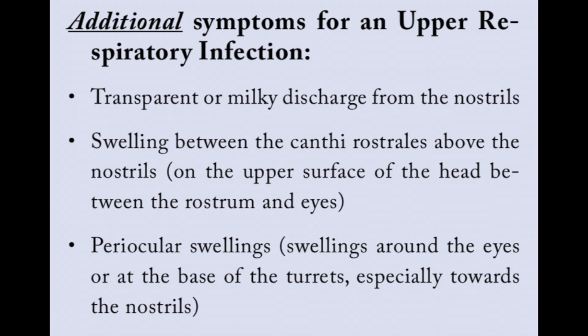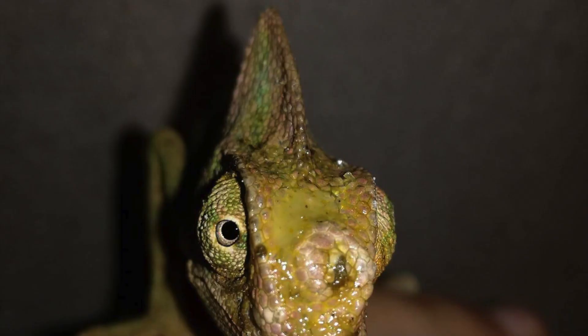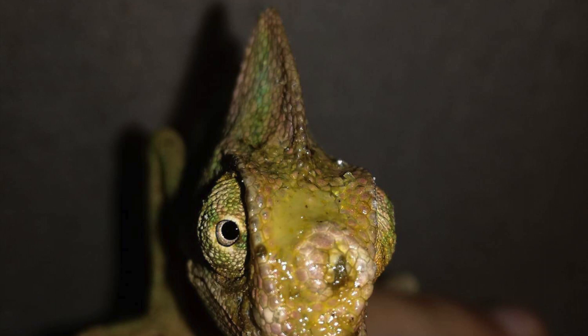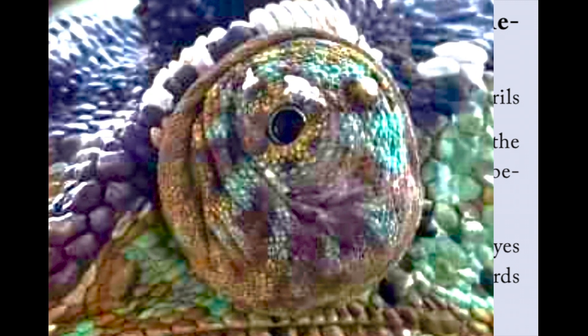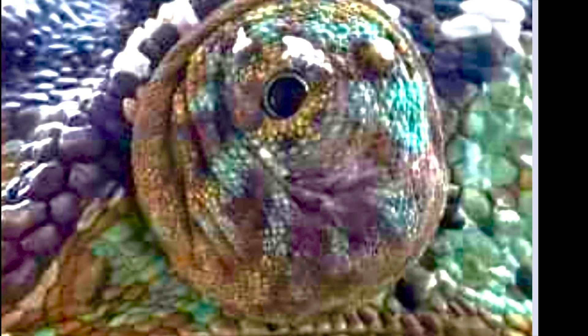The upper respiratory infection has some additional symptoms like transparent or milky discharge from the nostrils, swelling between the canti rostralis above the nostrils on the upper surface of the head between the rostrum and the eyes, and periocular swellings — meaning swellings around the eyes or at the base of the turrets, especially towards the nostrils.